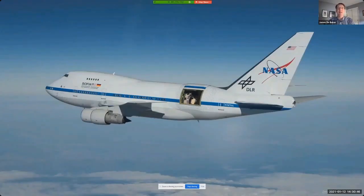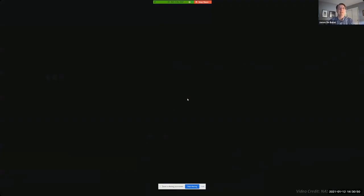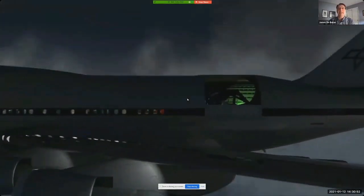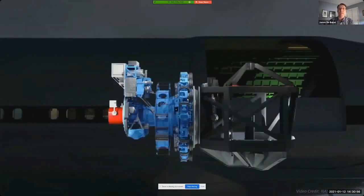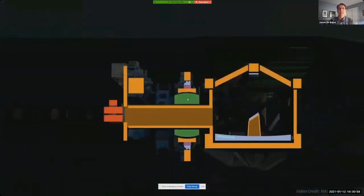So what is SOFIA? It's an observatory built out of a heavily modified Boeing 747 aircraft, and mounted inside this aircraft is a 2.5 meter diameter telescope that's optimized for performing science in the far infrared.